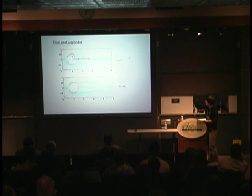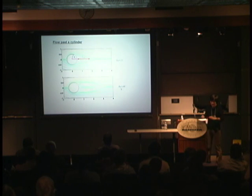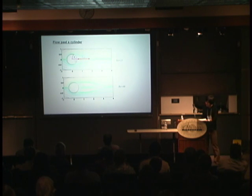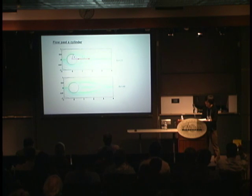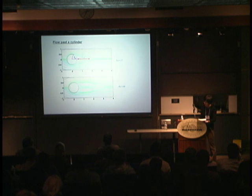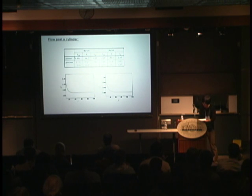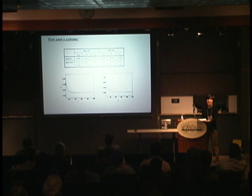At lower Reynolds numbers — 20 or 40 — the wake is stable. Previously at Reynolds number 200, there's a von Kármán wake; at lower Reynolds number, you expect a trailing bubble behind the cylinder. We know experimentally where the separation occurs, so we compare the bubble size and stagnation/separation point with experimental measurements, and again these fall in the expected range.